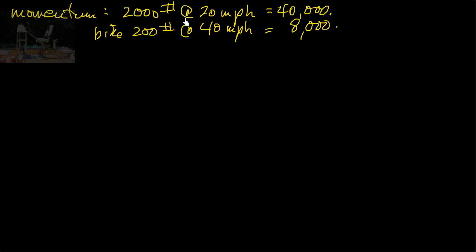Clearly, the car has significantly more momentum than the fellow on the bike, in fact, by a factor of 5. So we can now write the formula for momentum, and that would be the weight of the object times its speed.